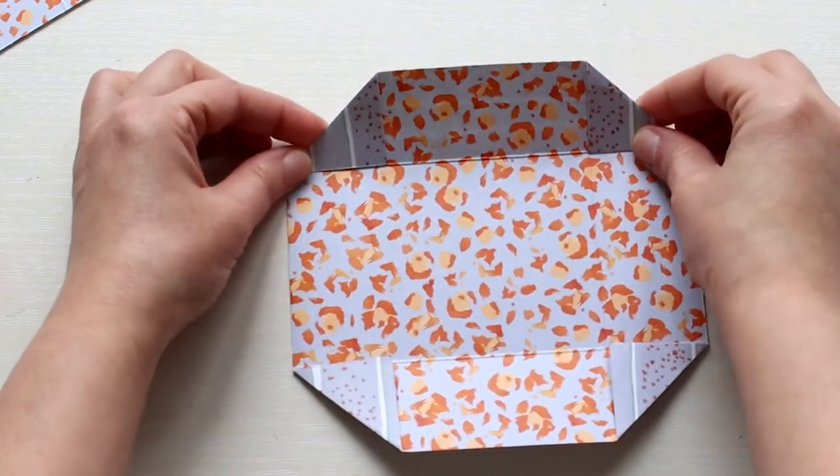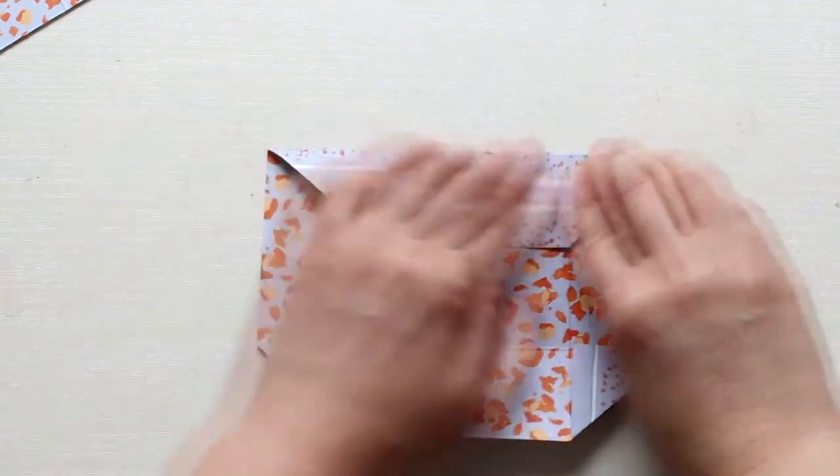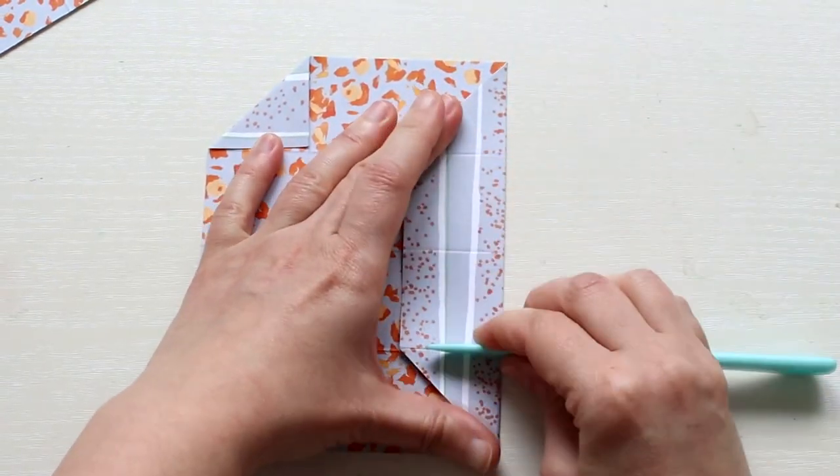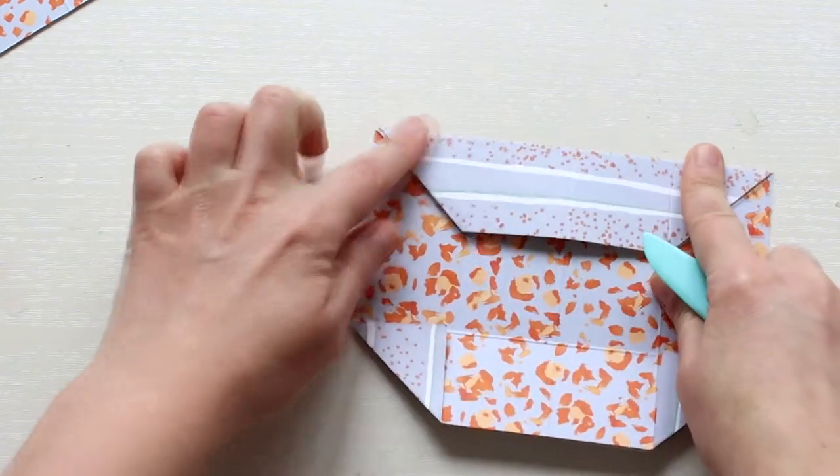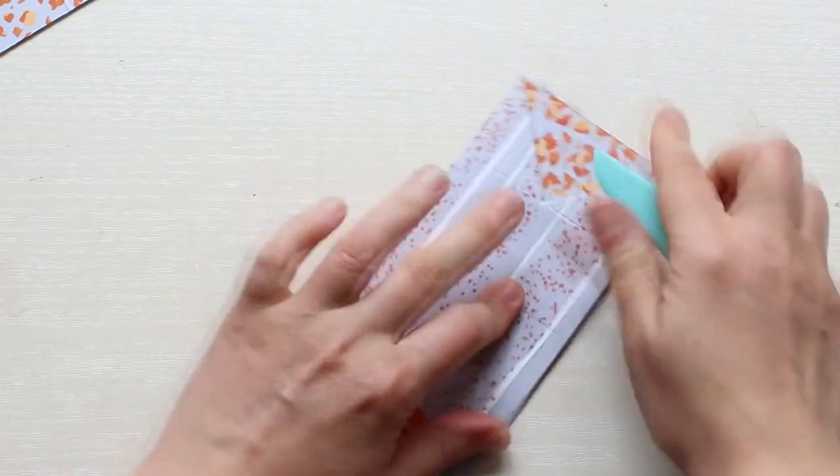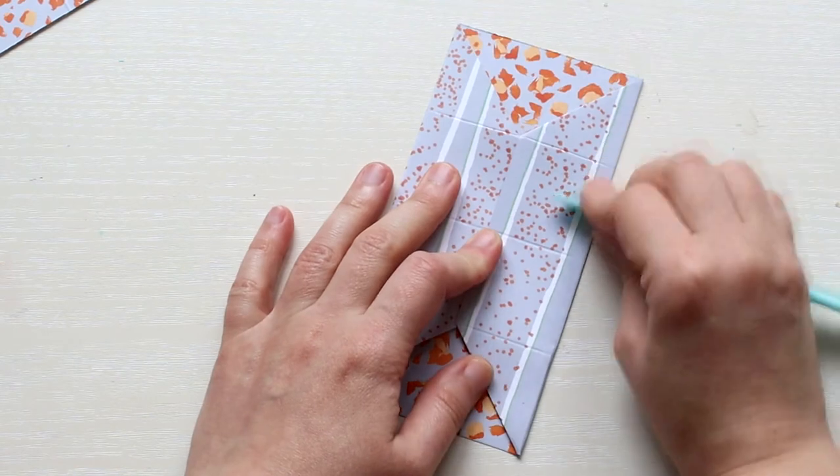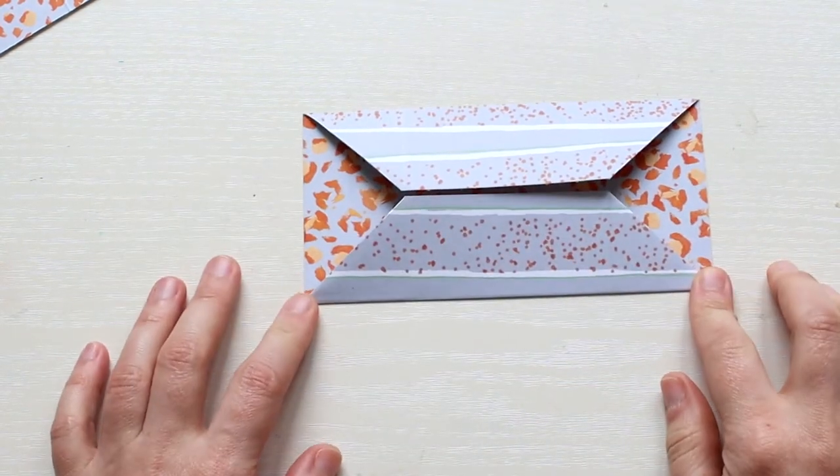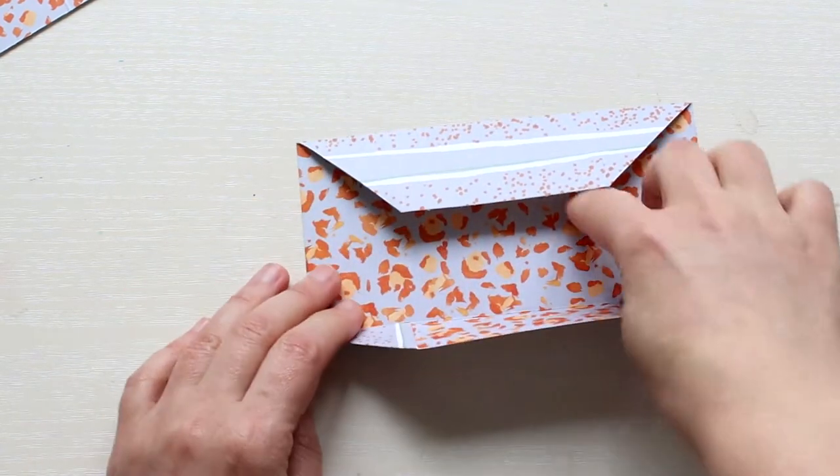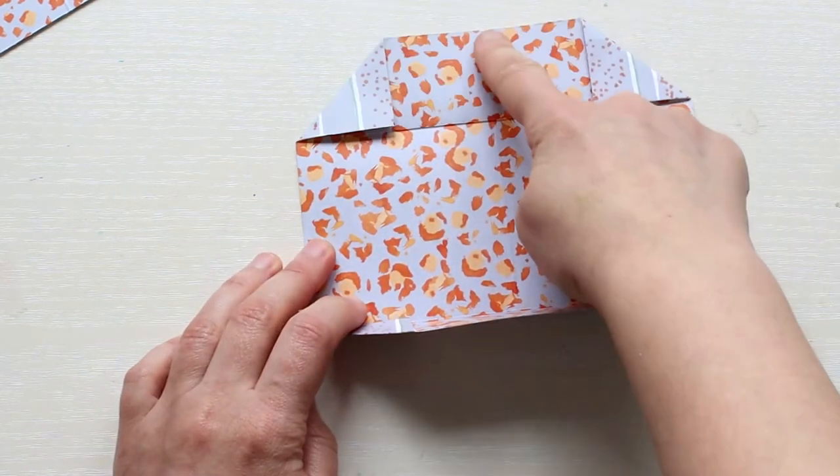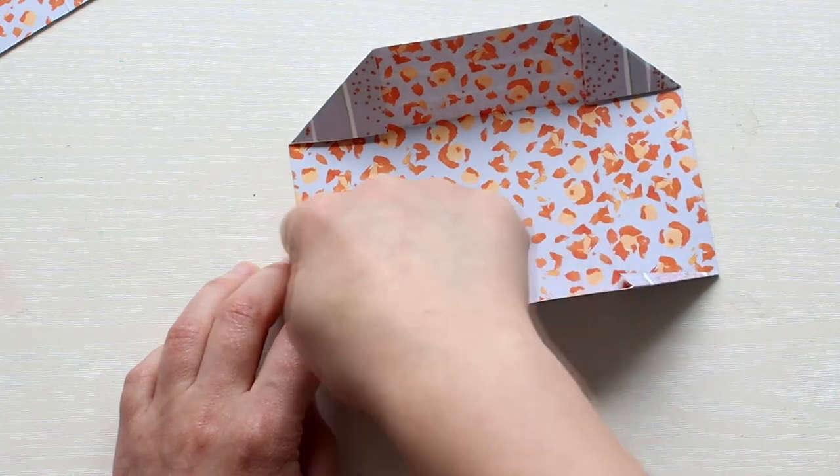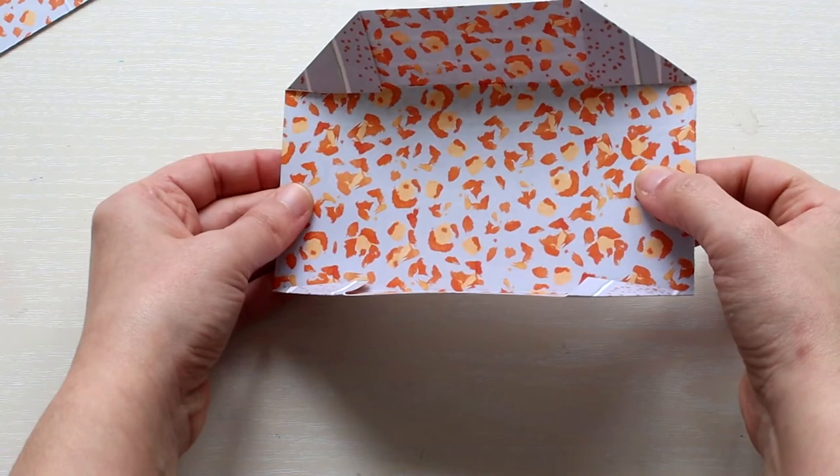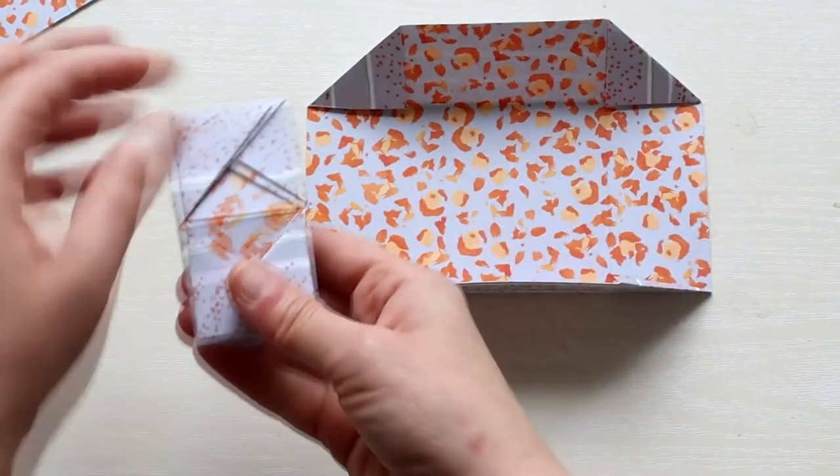Then fold the top and bottom flaps. If you remember we only scored the center line on one side of the square. So when you fold the flaps the center score line should not be visible.